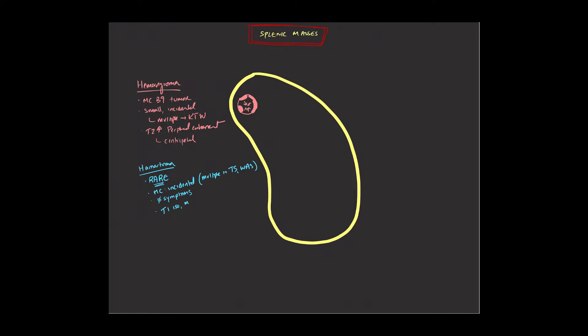Now, the imaging appearance can be variable, quite isointense to the spleen on the T1-weighted images. On the T2-weighted images, it tends to be slightly hyperintense, but overall has somewhat of a heterogeneous appearance. And when you give contrast, there is uniform, prompt, and quite avid enhancement.